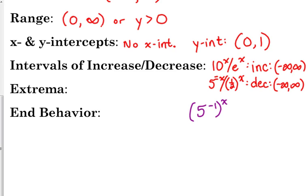Now, why can I do that? What property of exponents am I using? The multiplication. When you raise a power to another power, you multiply. So negative 1 times x is negative x. So I'm just going backwards.